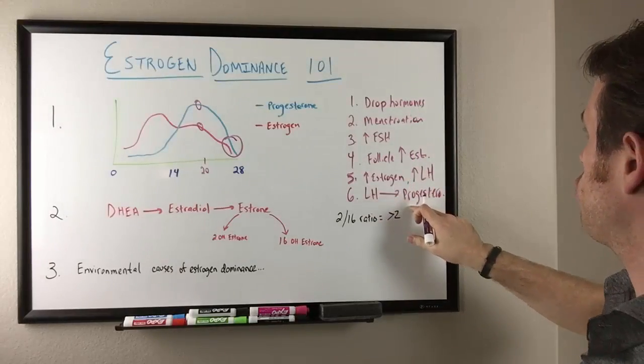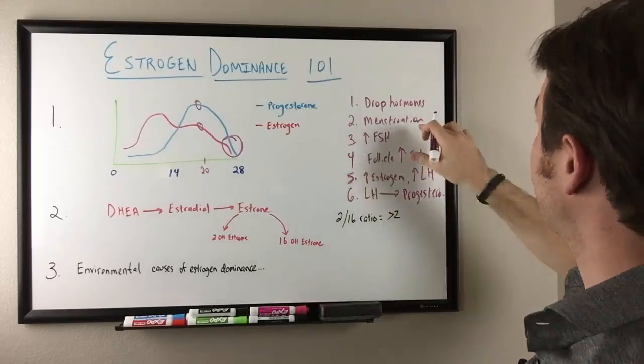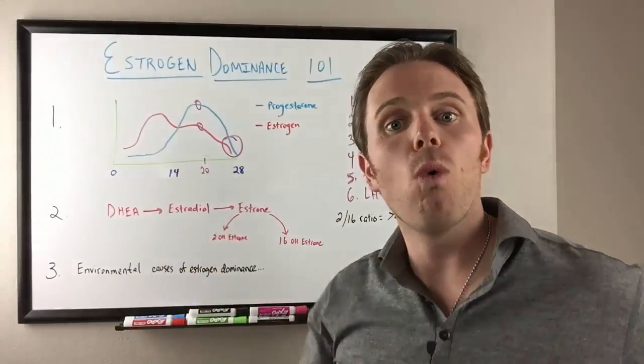Number six, that LH increases progesterone. And the last thing is the progesterone falls, drop in hormones along with estrogen and that signals menstruation.